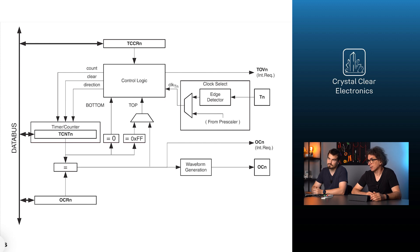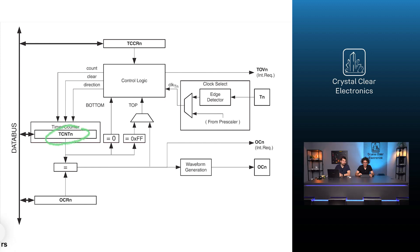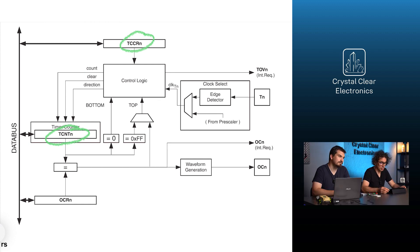In section 14.2 of the datasheet you can see the structure of the timer counter 0 peripheral. The TCNT register is a counter, controlled by the timer control logic according to the settings in the TCCRN register. Here, n is the number of the counter — that is, in the case of timer counter 0, the corresponding registers are TCNT0, TCCR0, and so on.